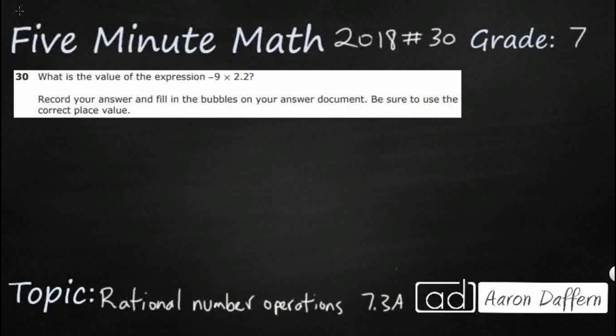So we have an expression here: negative 9 times 2.2. That's it. We have to do a simple multiplication problem. As you can tell, there are no answer choices F, G, H, and J, so we are going to have to bubble it in correctly. But let's just do the basic multiplication. First, we are going to go ahead and ignore the negative sign. We'll deal with that in a second. Let's just pretend it's 9 times 2.2.